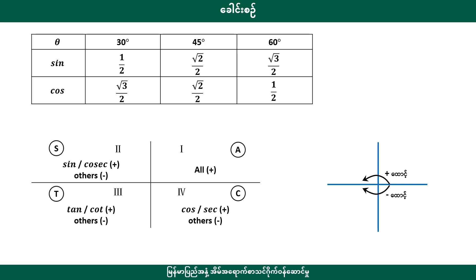If you want to see the special angle, the special angle is equal to 0. If you want to see the sign, you can see the sign of the standard. The sign is equal to 0.